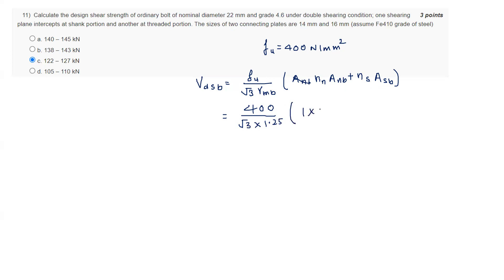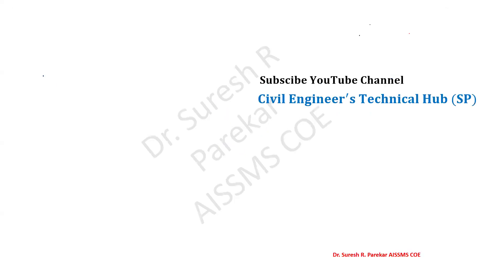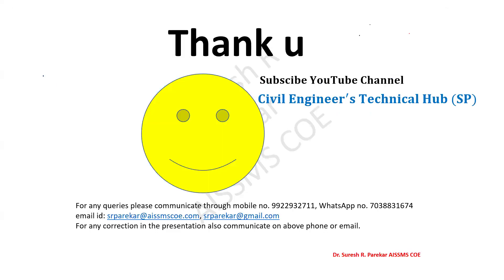Fu is 400 upon root 3 gamma MB is 1.25. NN, ANB is 0.78 into diameter 22, so 5 by 4 into 22 square, plus NS which is 1 into ASB 5 by 4 into 22 square. Calculating this, I got VDSB value of 125 kilonewtons. For this we have between 122 to 127 kilonewtons, so option is C. This is how we solve the questions related to assignment number 2. Now we will stop here. Thank you.